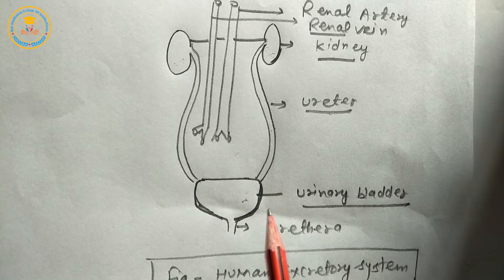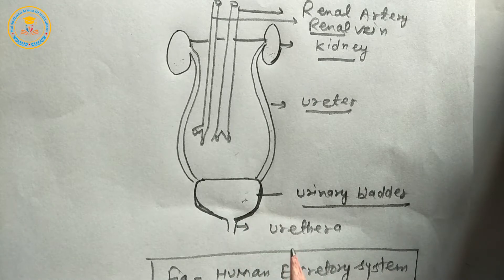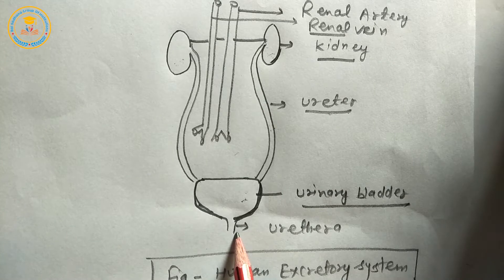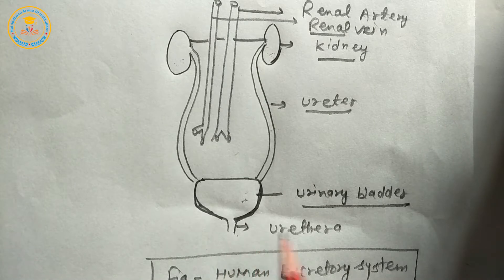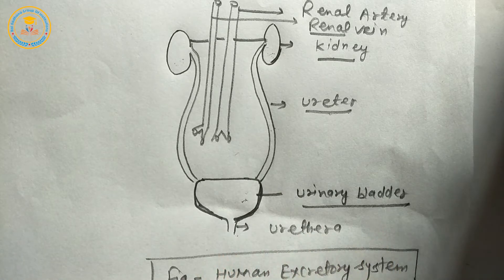About 500 to 600 ml. Urethra: it is an accessory excretory organ. Structure: tubular. It opens to the outside of the body and releases urine from the human body to the outside.